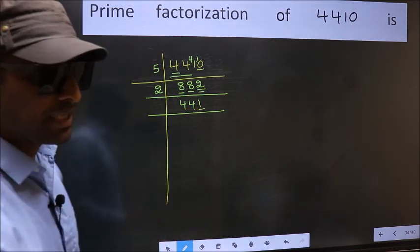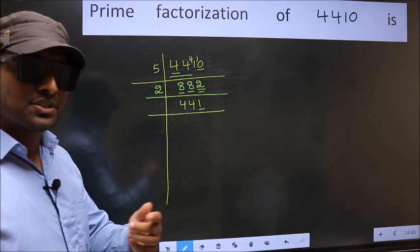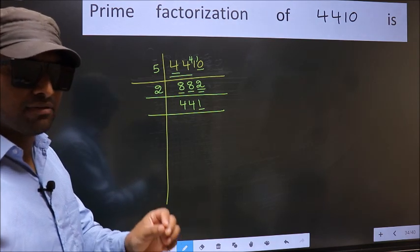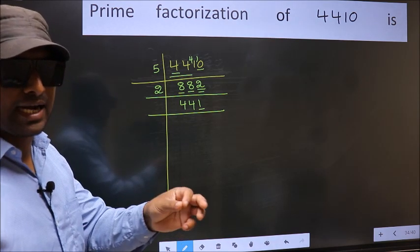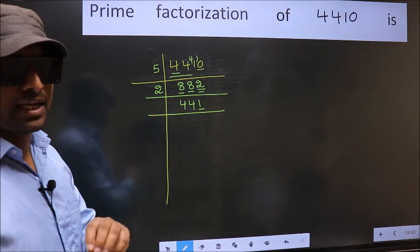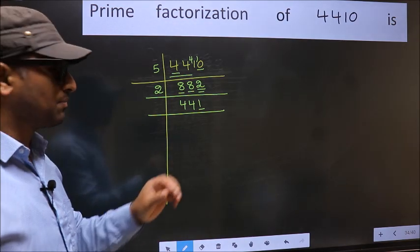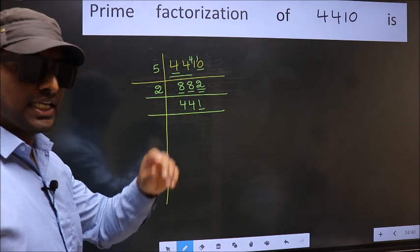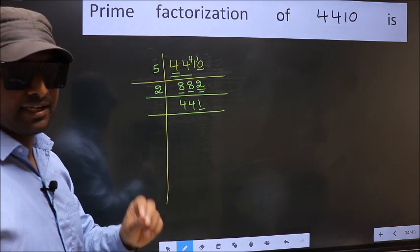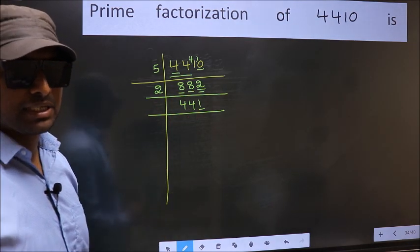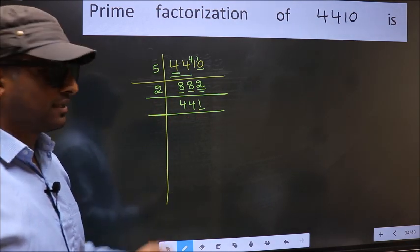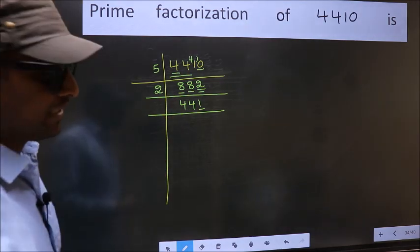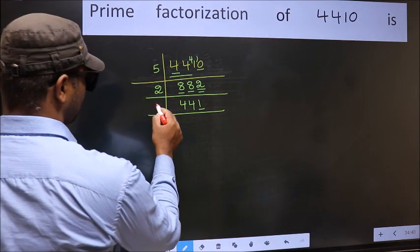Next prime number is 3. To check divisibility by 3, we add the digits: 4+4+1 = 9, and 9 is divisible by 3, so this number is also divisible by 3. So take 3 here.